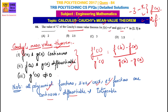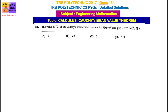Here, f of x is equal to e power x, and g of x is equal to e power minus x. So f dash of x is equal to e power x, and g dash of x is equal to minus e power minus x.